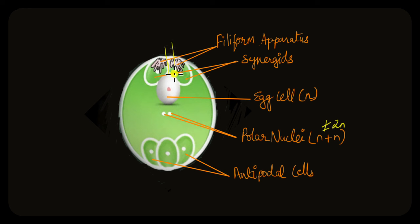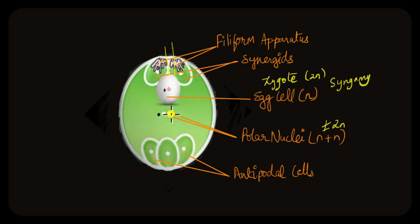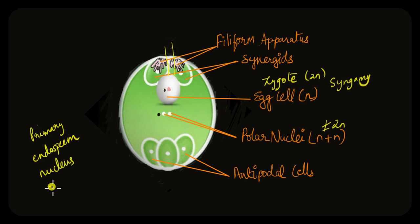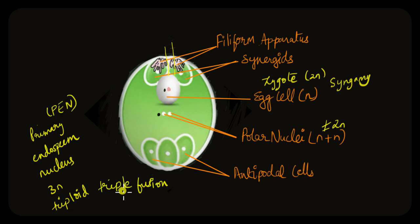Now that the pollen tube has entered the embryo sac, the gametes also reach inside. One of the gametes fuses with the egg cell and forms the diploid zygote — this process is called syngamy. The other male gamete fuses with the two polar nuclei to give rise to the primary endosperm nucleus (PEN), which is triploid because three haploid nuclei are fusing together. This is called triple fusion. So, inside the embryo sac, two events take place — syngamy and triple fusion — making the entire process called double fertilization.